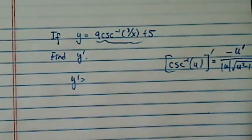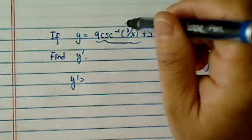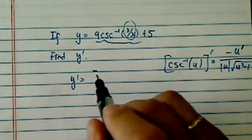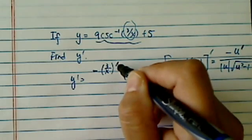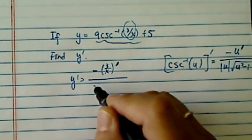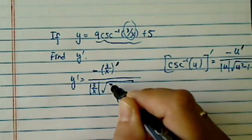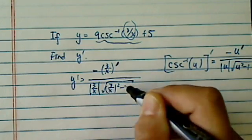Our u here, of course, is 3 over x. We don't have to take the derivative of this one. So let's get started. Minus 3 over x derivative of that one, and then 3 over x absolute value, 3 over x squared minus 1.